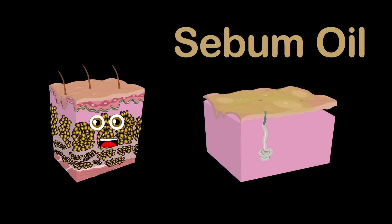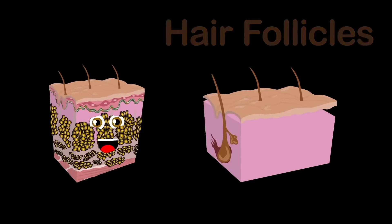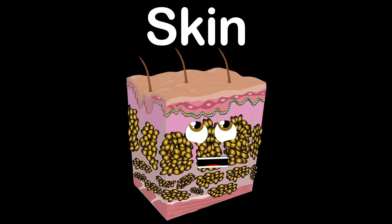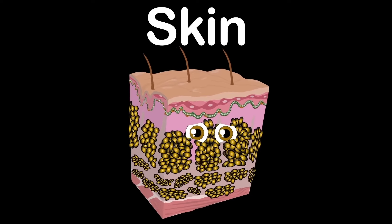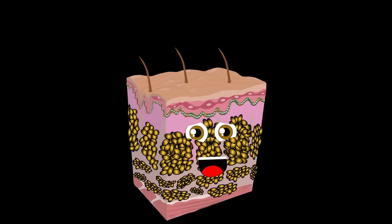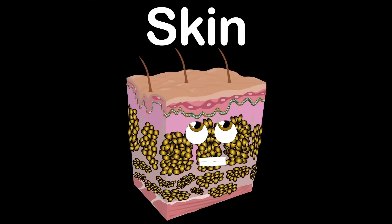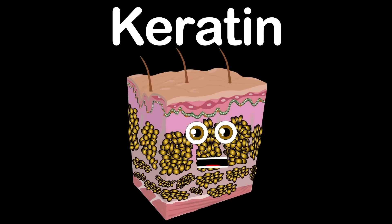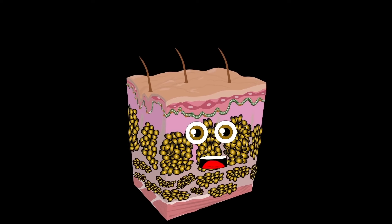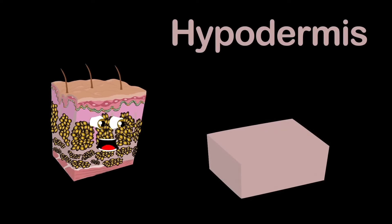The pores also secrete sebum oil so your skin does not dry out, and hair follicles that make and hold your hair. The hypodermis connects your skin to muscle and organs — its main functions are to store fat and protect you from an impact on your skin. The integumentary system is what skin is part of, which includes skin, hair, nails, and eccrine glands from the body you live in. Please take care of your skin and your body every day — you only have one body, so keep its systems healthy.